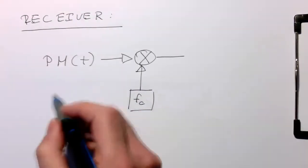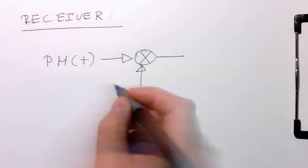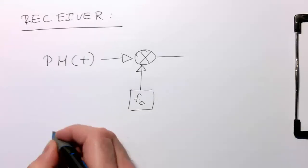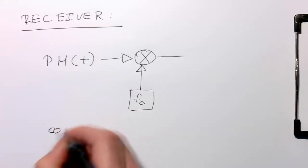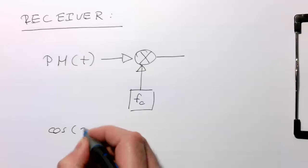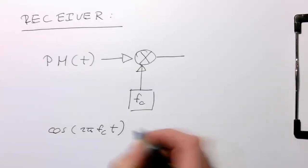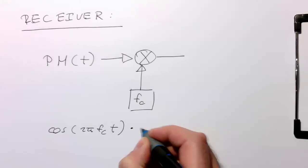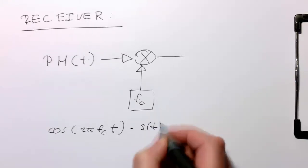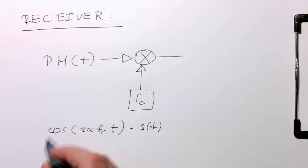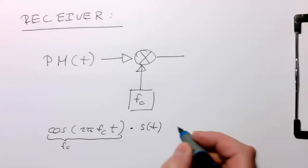Remember, our PM signal—let's write this down—is composed of the carrier cosine 2π fc t multiplied by our symbol sequence s(t). This is our carrier, fc. Now we do the same thing again.